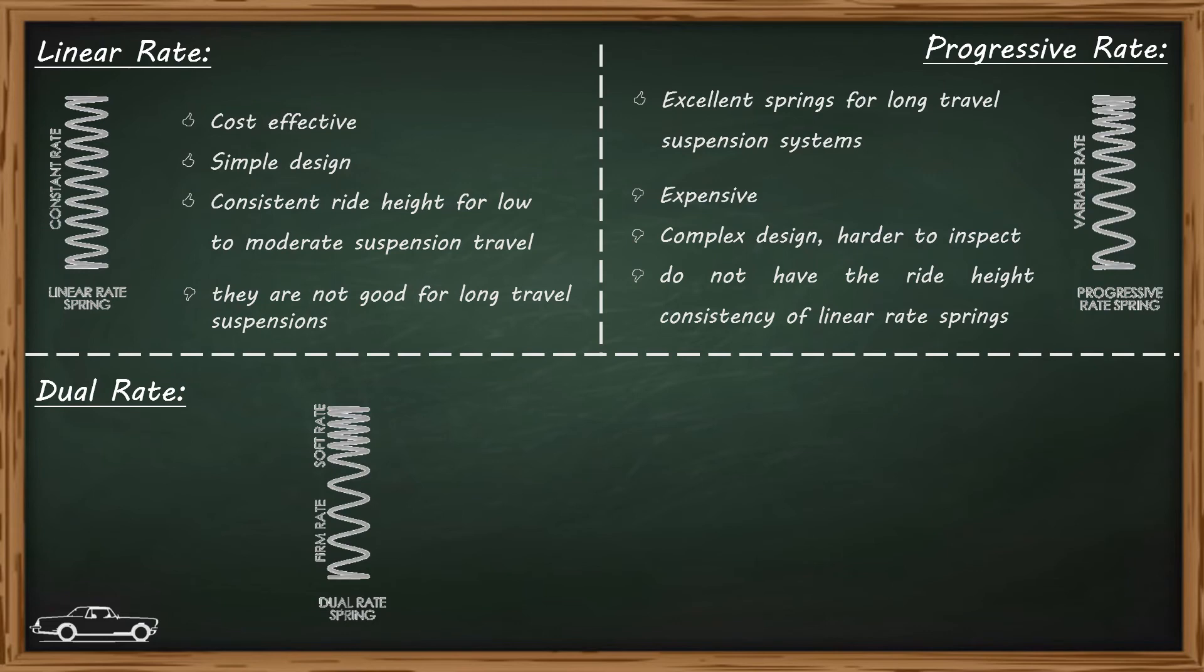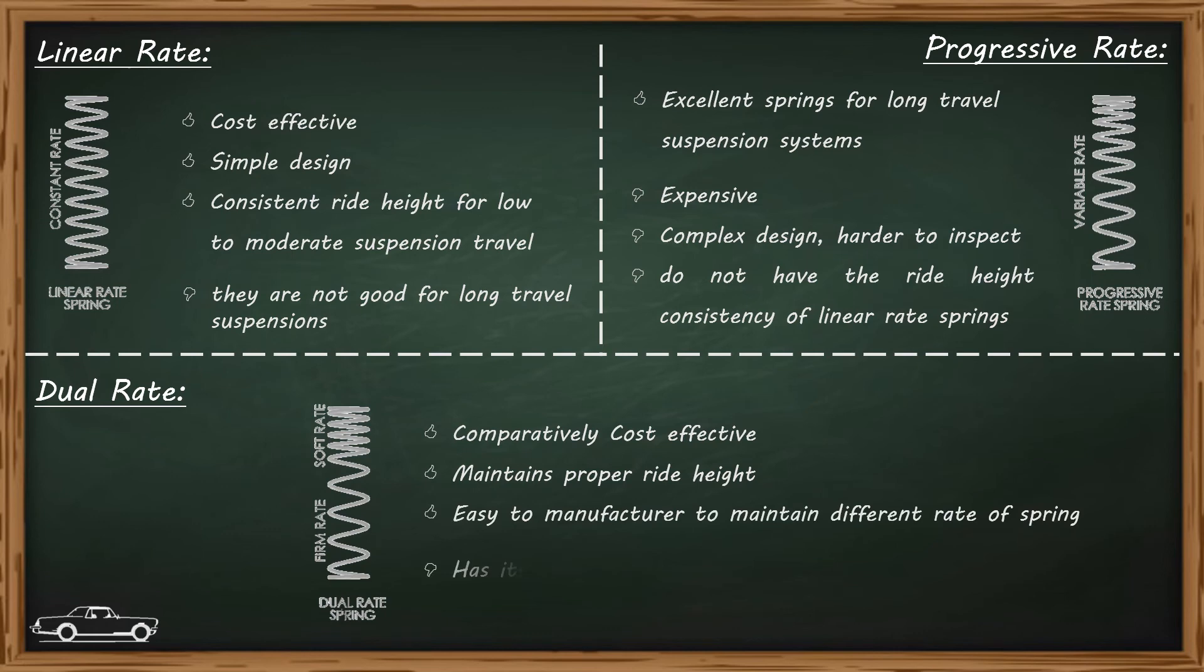Now let's move on to dual rate spring. These are the springs with two different rates. The spring accommodates a softer rate followed by a stiffer spring rate. They are comparatively cost effective than progressive springs, they help in maintaining proper ride height, and the design is not as complex as progressive springs.